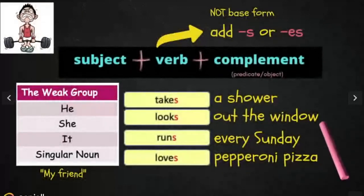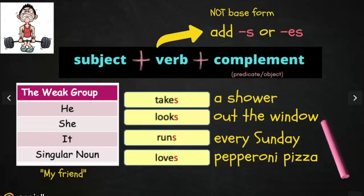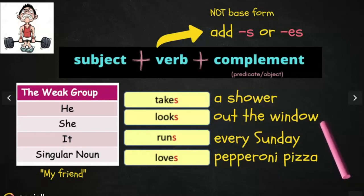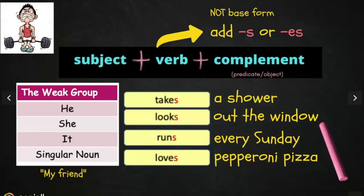For the weak group — remember that it was he, she, and it, or a singular noun like my friend — we need to use this formula: subject plus verb, not in base form. We need to add S or ES, plus complement. Examples: he takes a shower, she looks out the window, it runs every Sunday, my friend loves pepperoni pizza.